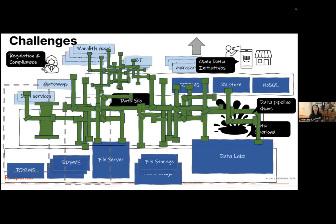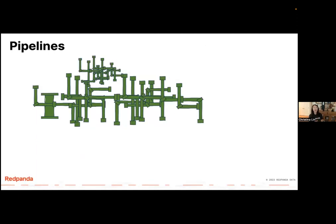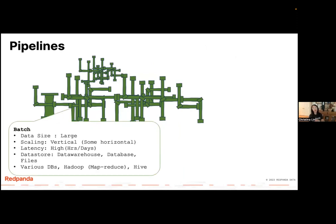Last but not least, data pipeline chaos. Because we have all these needs and challenges, we're creating a lot of data pipelines to move data from one point to another. A lot of data pipelines were just built on somebody's laptop — if that person leaves, the pipeline is gone. I've seen this a lot especially with marketing teams maintaining a single Google Sheet as a data store.